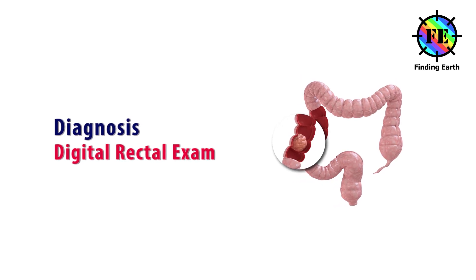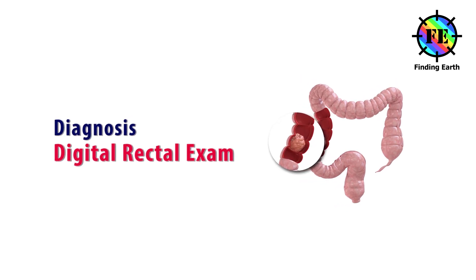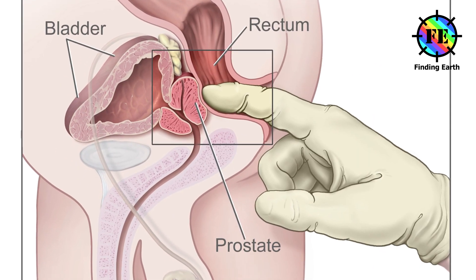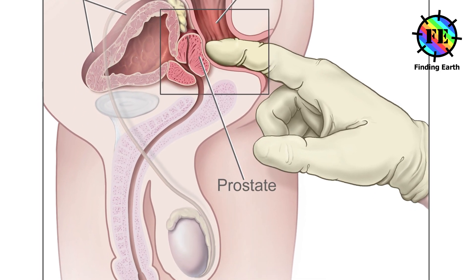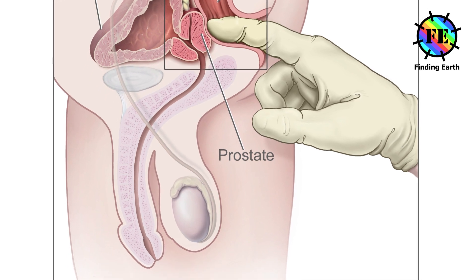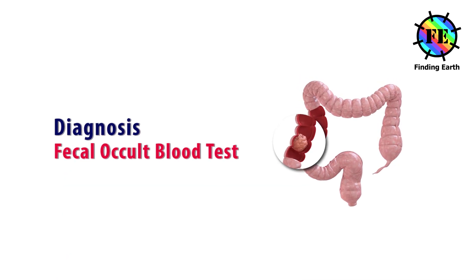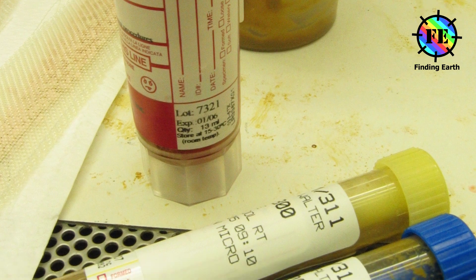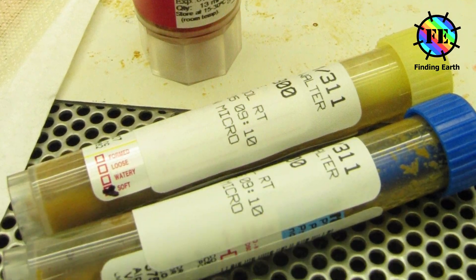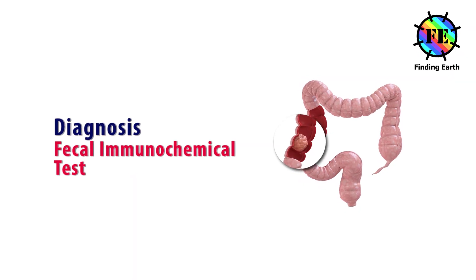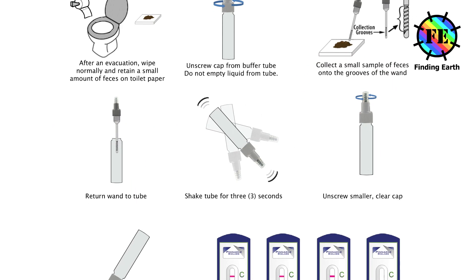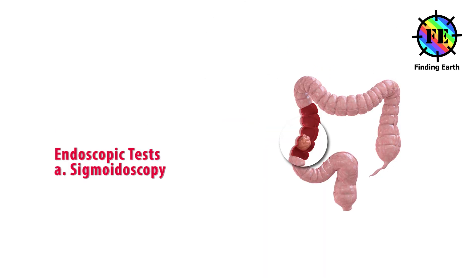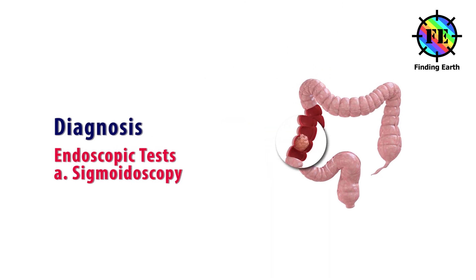Diagnosis. Digital rectal exam: The doctor inserts a gloved finger into the rectum to feel for polyps or other problems. Fecal occult blood test: This take-home test finds blood in stool. Fecal immunochemical test: This take-home test finds blood proteins in stool.